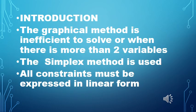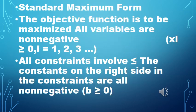Simplex method is used because the graphical method is inefficient to solve when there are more than two variables. All the constraints must be expressed in linear form. In the standard maximum form, the Simplex method is always a maximization problem. Sometimes it will be minimized, where we have to change the objective function to maximized. All variables x_i will be greater than or equal to 0 — they are all non-negative variables — and all constraints involved will be less than or equal to. The constants on the right side in the constraints are all non-negative.